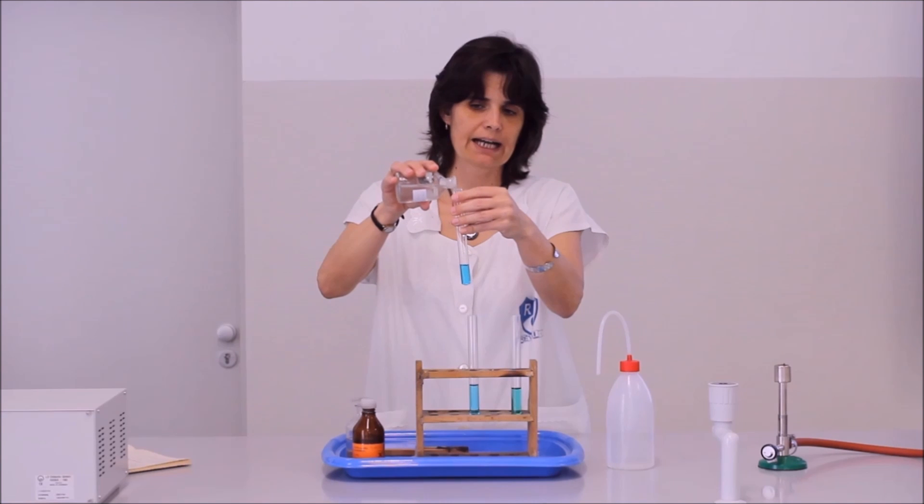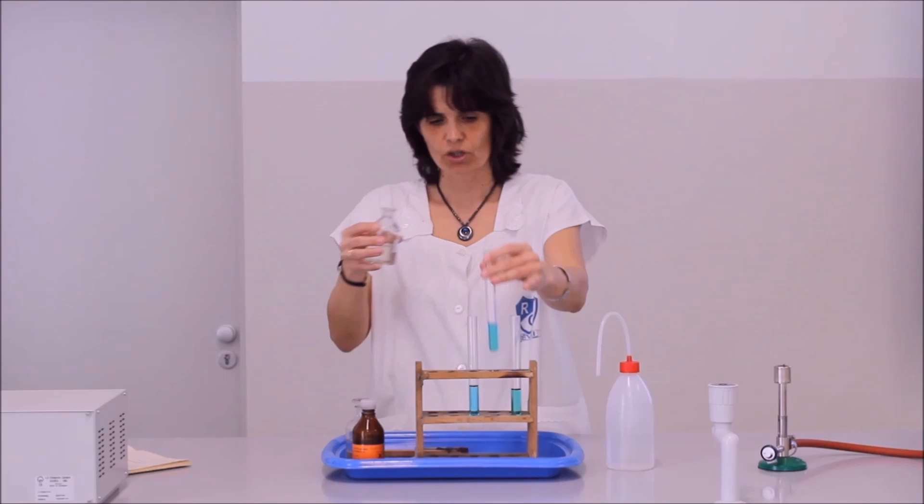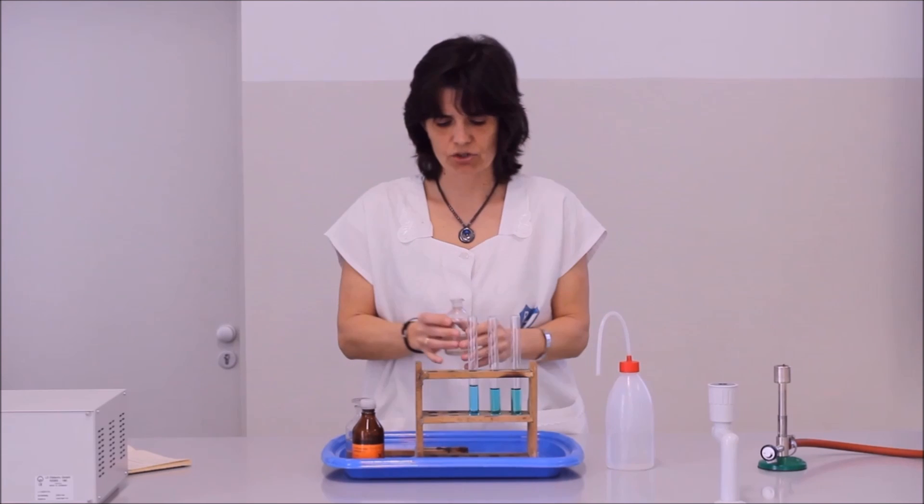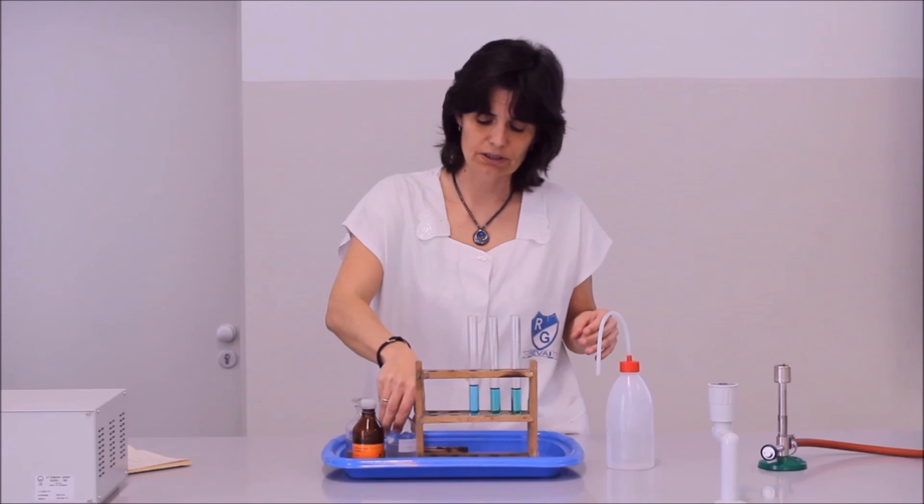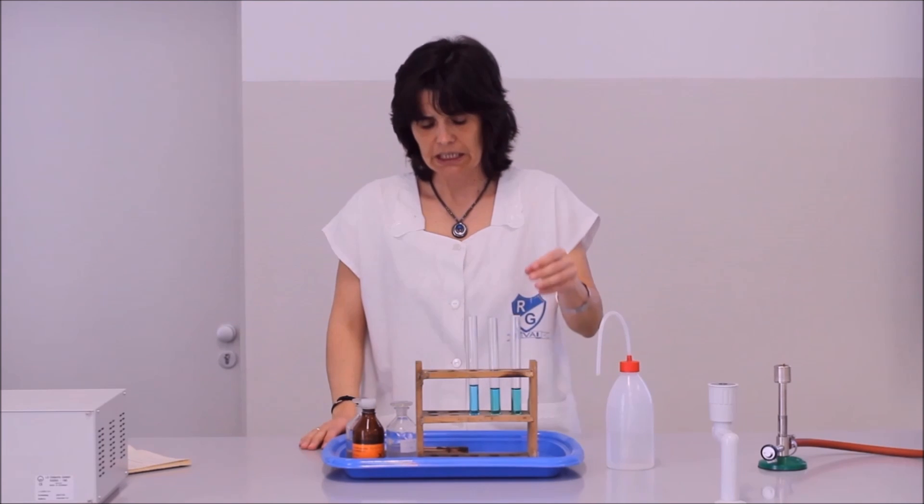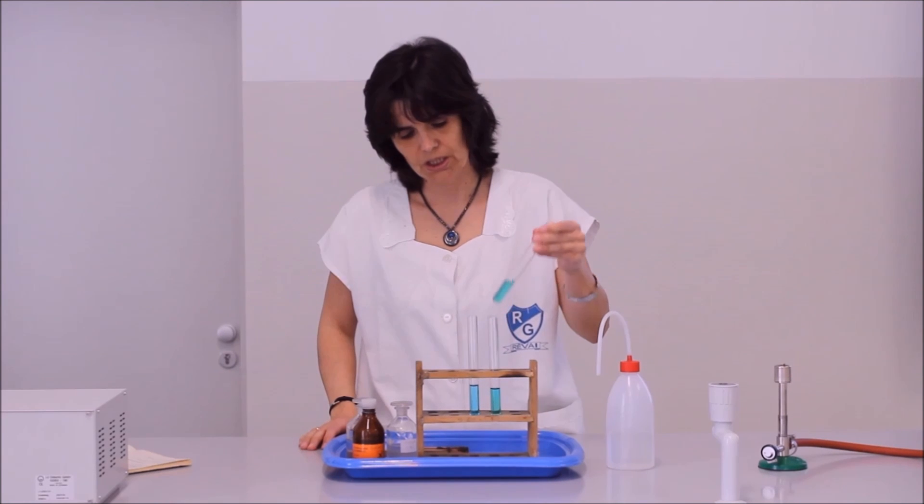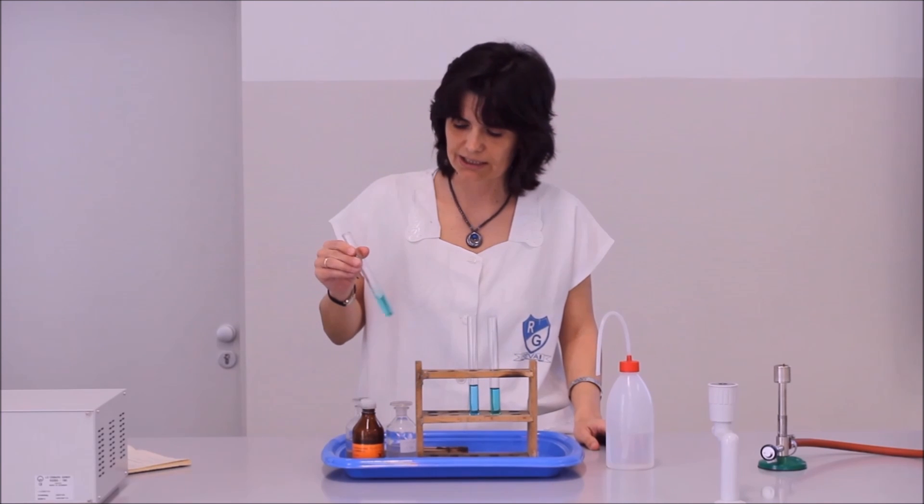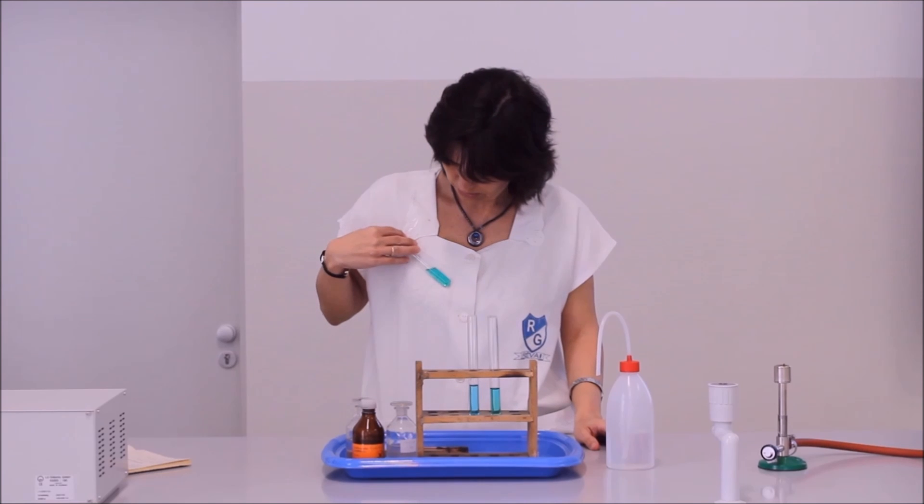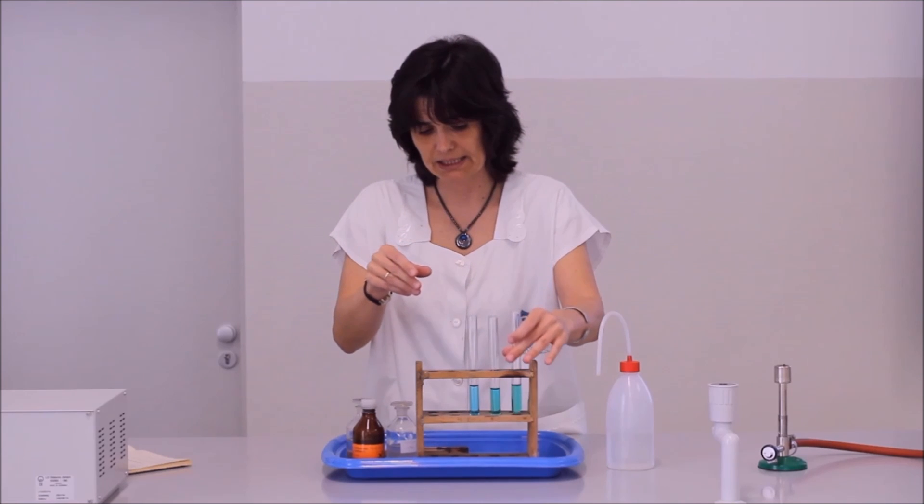Színtelen a káliumbromid oldat, kék színű volt a részszorfát oldat, és a két anyag egymásra hatásakor rész tetrabromid komplexion keletkezett. Ennek a komplexionnak a színe zöld, nem tökéletesen, ennél sokkal sötétebb zöld a rész tetrabromid komplex színe.